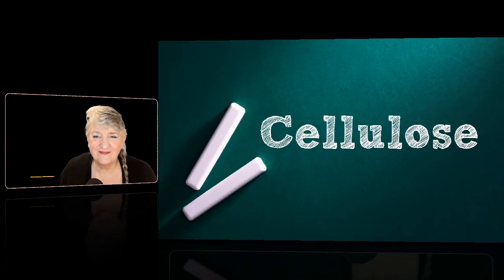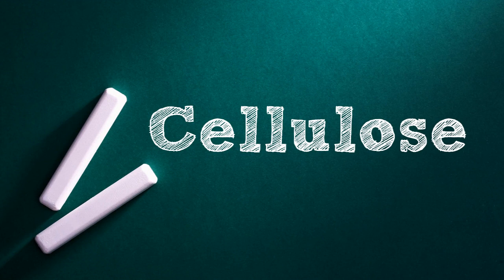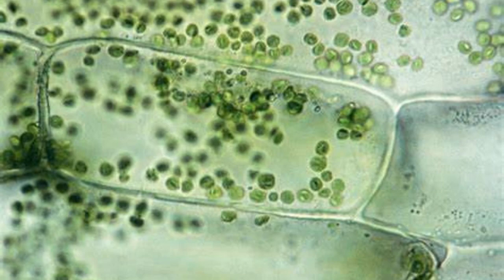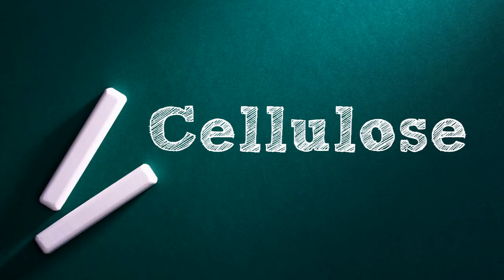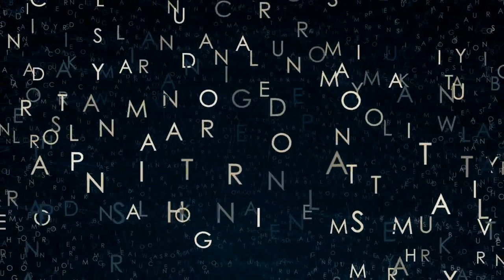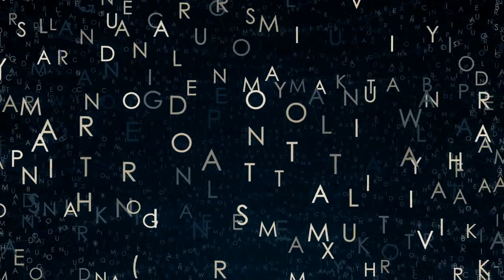Today's word is cellulose. Cellulose is a noun that names a polysaccharide of glucose units from which the cell walls of plants are composed. Cellulose occurs naturally in such fibrous products as cotton and kapok, and is the raw material of many manufactured goods such as paper, rayon, and cellophane. The word cellulose comes to us through French from Latin. First known use of the word cellulose is 1848. If you have a word you'd like me to explore in the Word of the Day section, pop it into the comments.